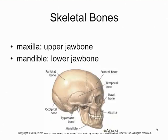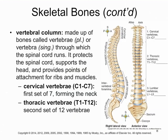The next several slides run through the basic skeletal bones you'll be associating with medical terms. First, the jawbone: you have an upper jawbone where your top teeth are attached, and a lower jawbone where your bottom teeth and chin are attached. The upper jaw is called the maxilla, and the lower jaw is called the mandible.